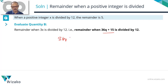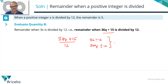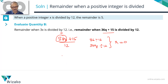So we need the remainder when 36q + 15 is divided by 12. Using exactly the same process: 36 is divisible by 12, so any multiple of 36 — including 36q — is divisible by 12, giving a remainder of 0. All that remains is to find the remainder when 15 is divided by 12, which is 3. So Quantity B equals 3.